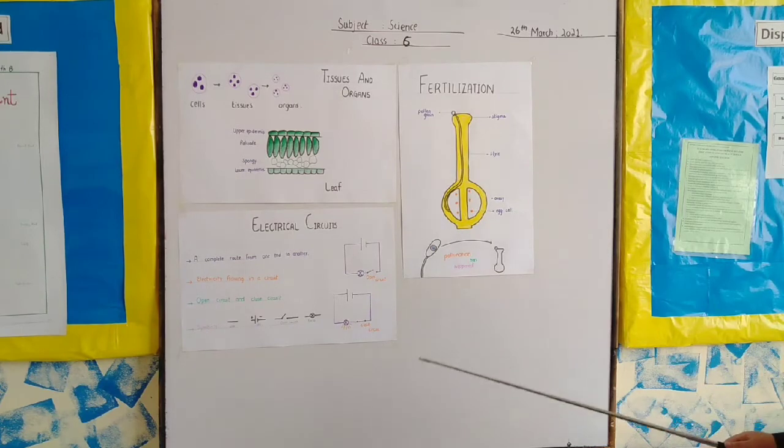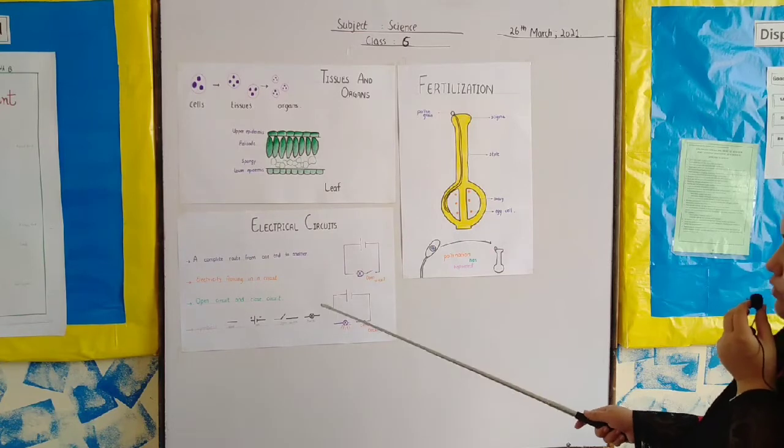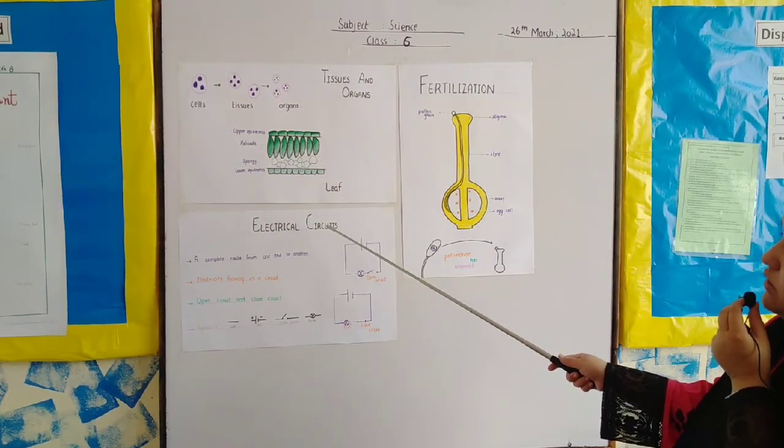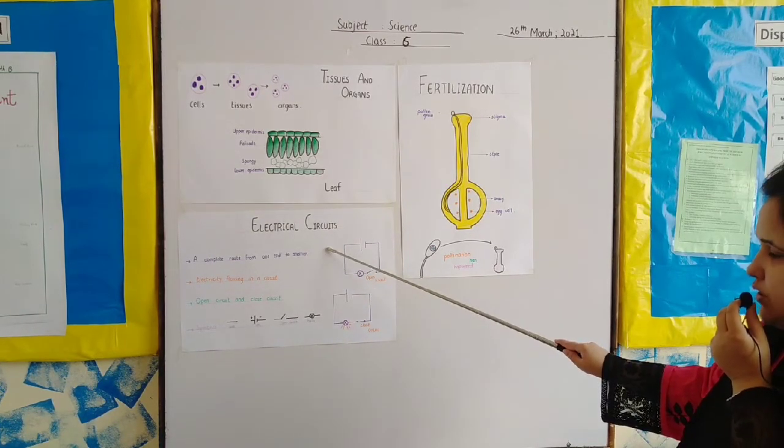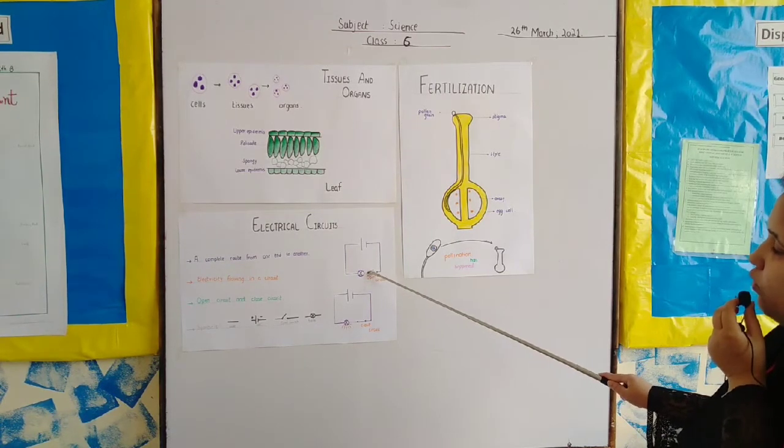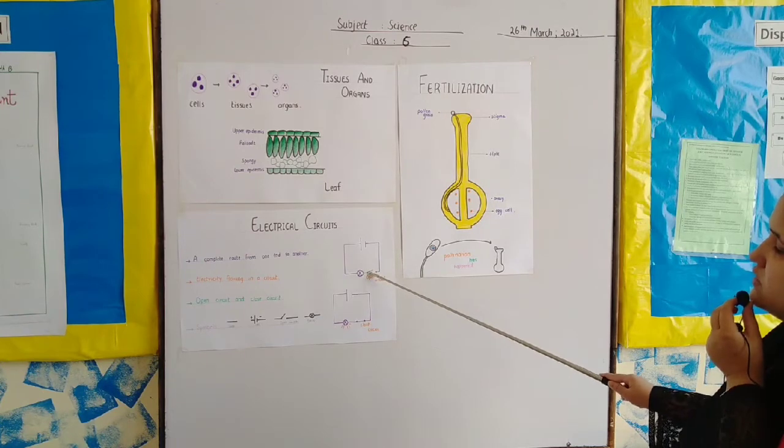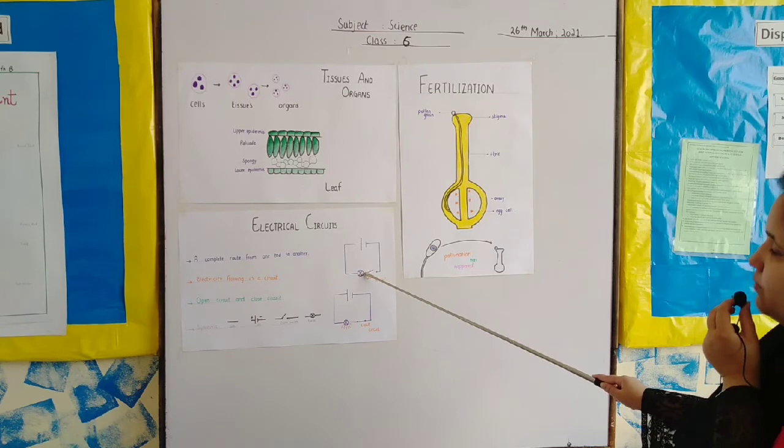What is open circuit and closed circuit? For example, how the bulb works? When we switch off the circuit, the switch opens and it is called an open circuit. As it is open, the current flowing in the circuit stops. And now there is no flow of electric current because of the switch.